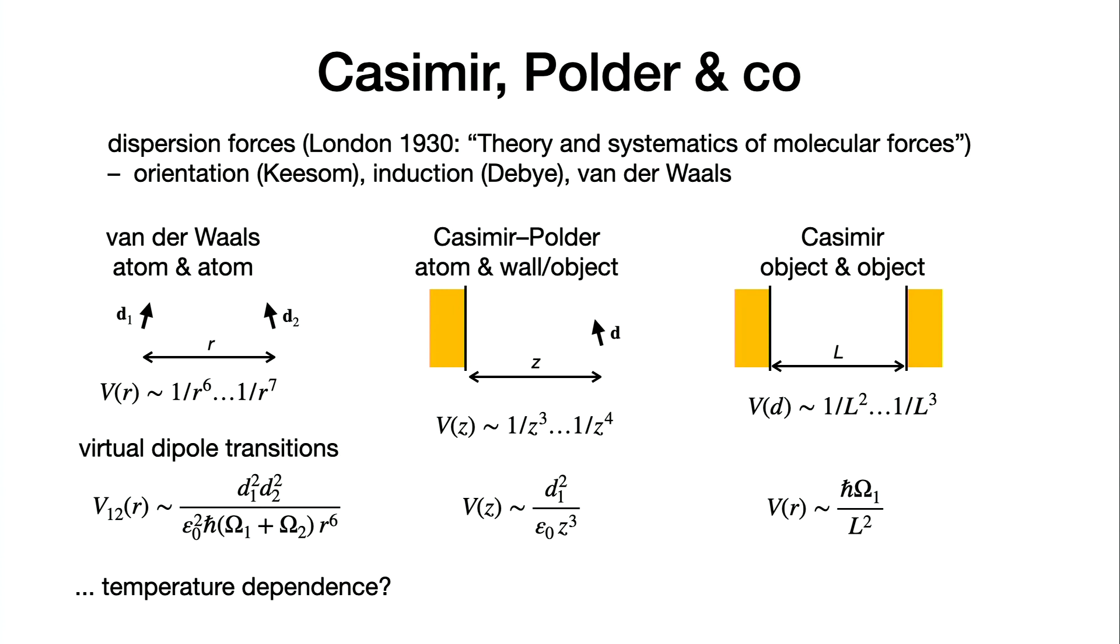Retardation means that this power law 1 over r to the 6, which is purely electrostatic with some perturbation theory because these dipoles are induced, then goes over into 1 over r to the 7. That has been observed in colloidal particles. Casimir and Polder worked out what happened at large distances, meaning when the runtime for light from one atom to the other becomes comparable to the typical transition frequencies.